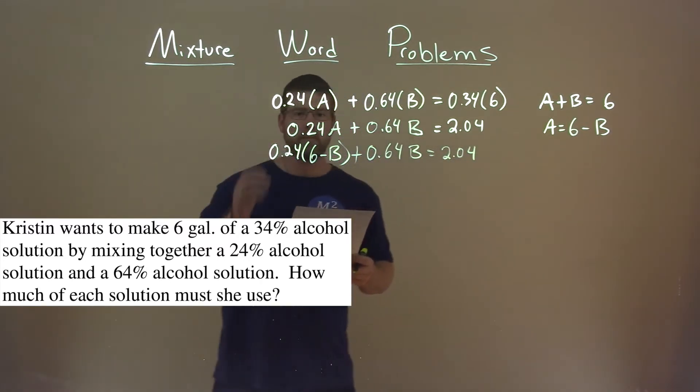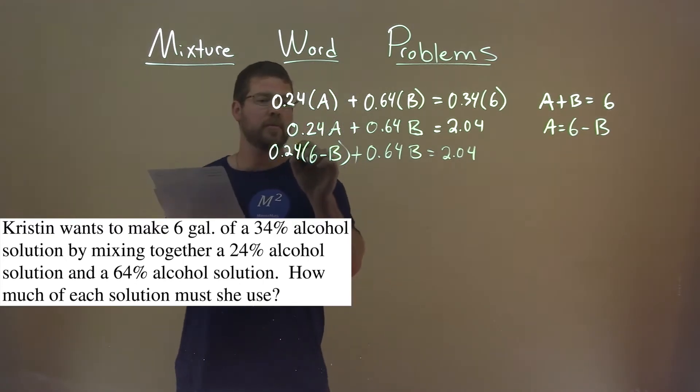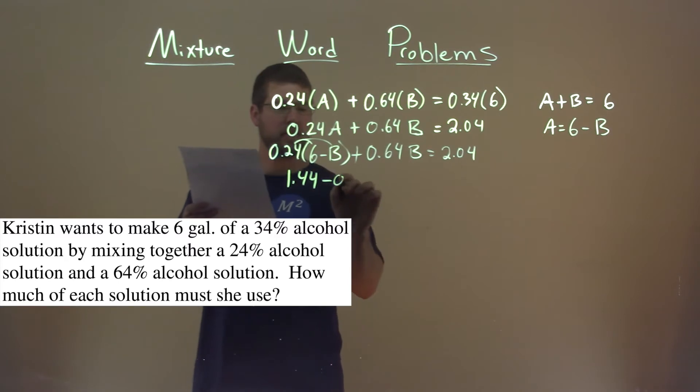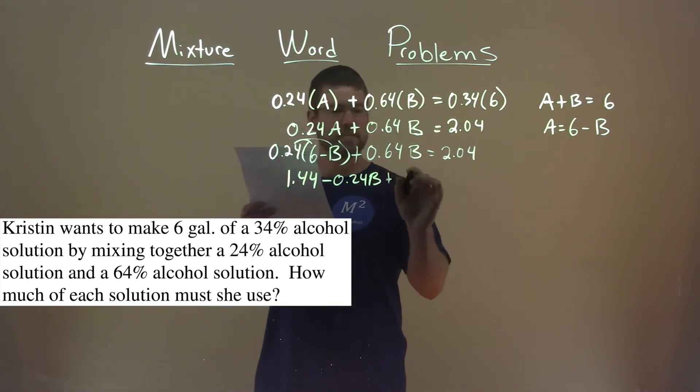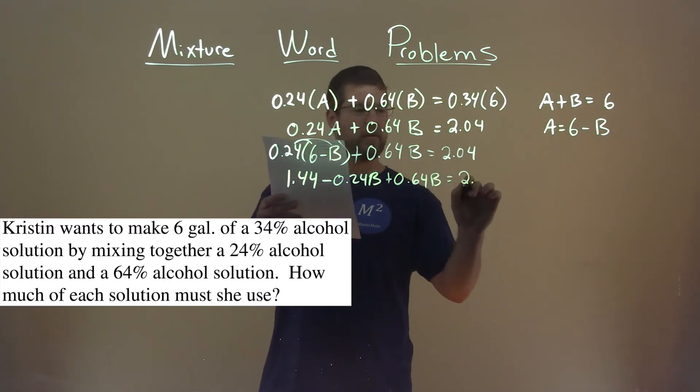So now where do we go from here? Well, let's go distribute this 0.24 to both parts. 0.24 times 6 is 1.44 minus 0.24B plus 0.64B is equal to 2.04.